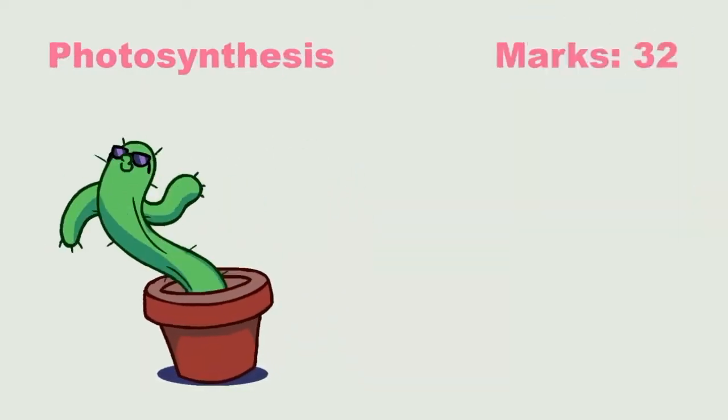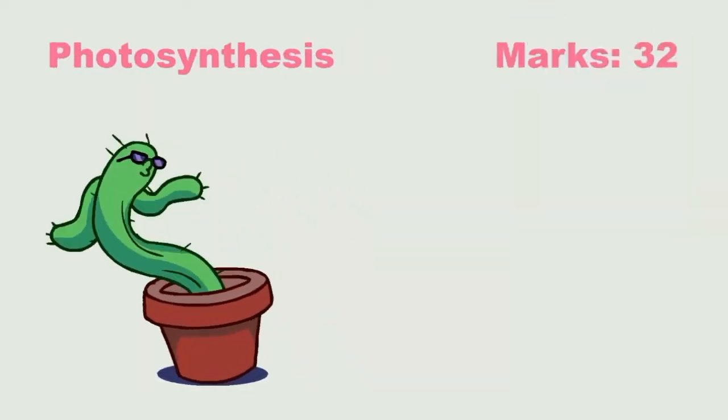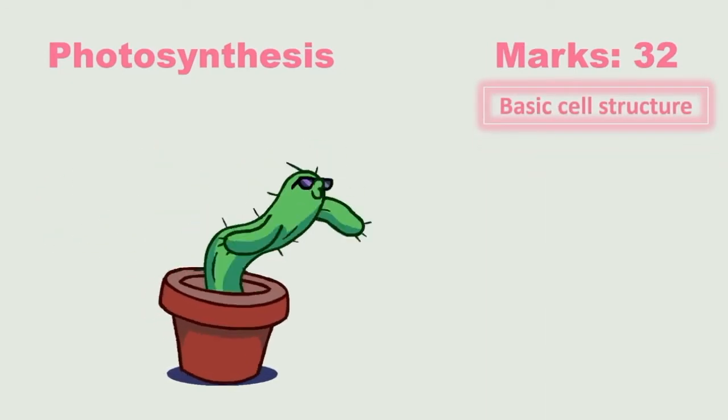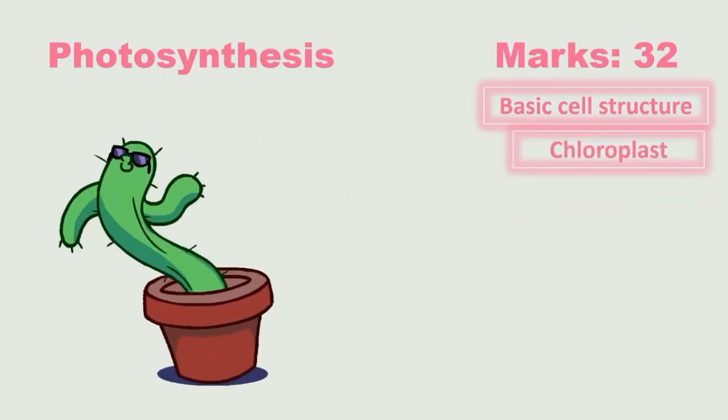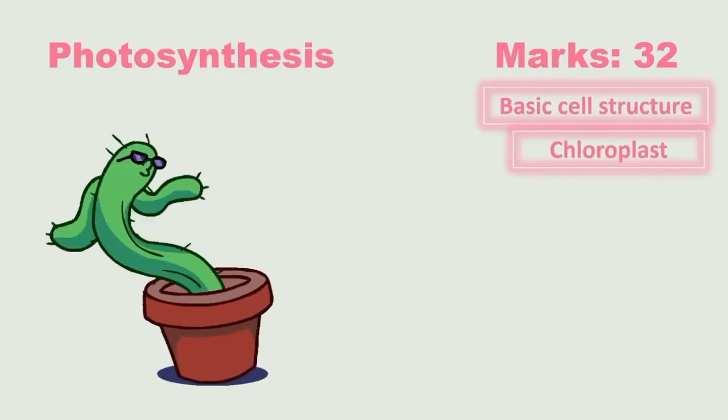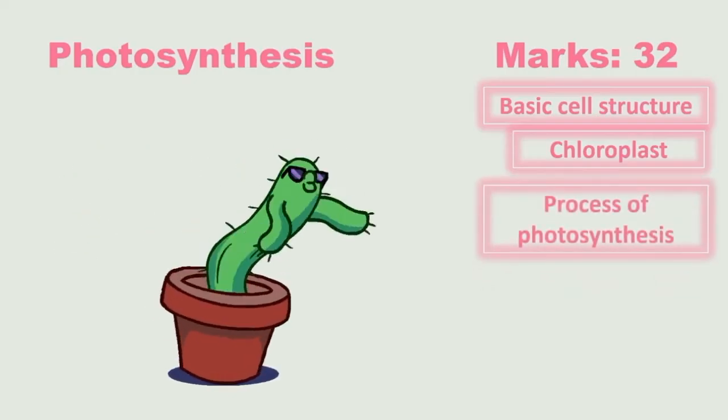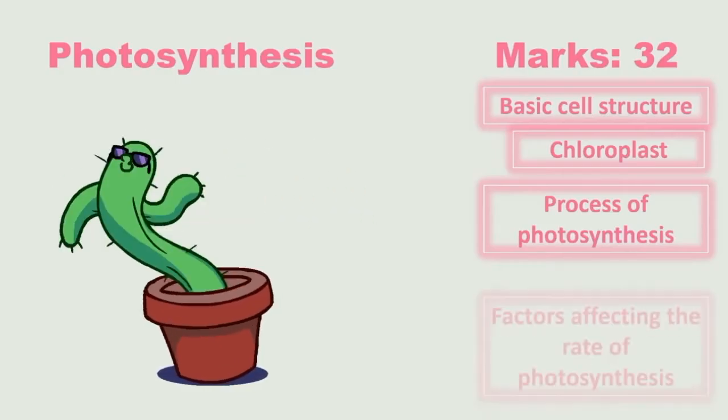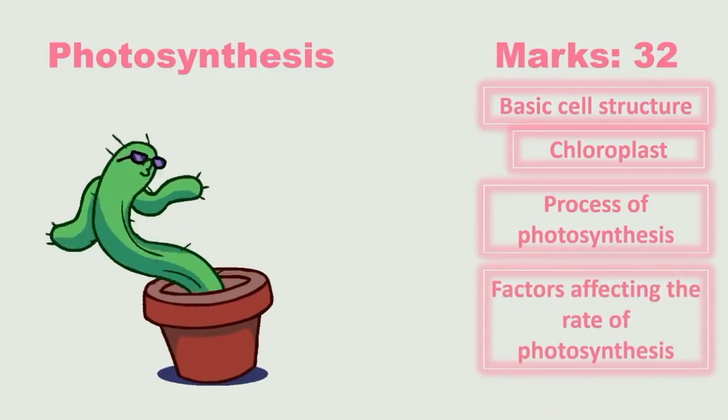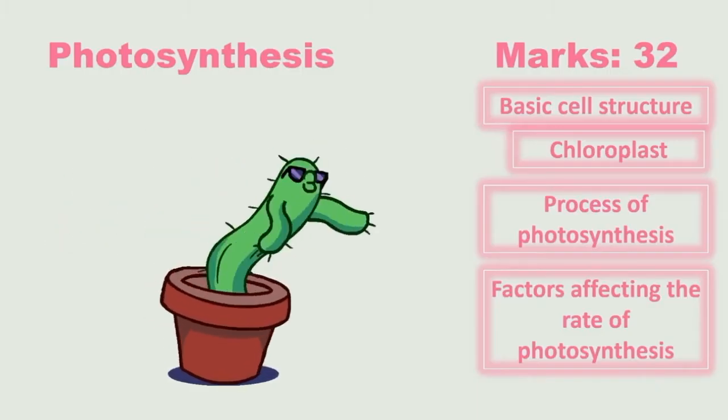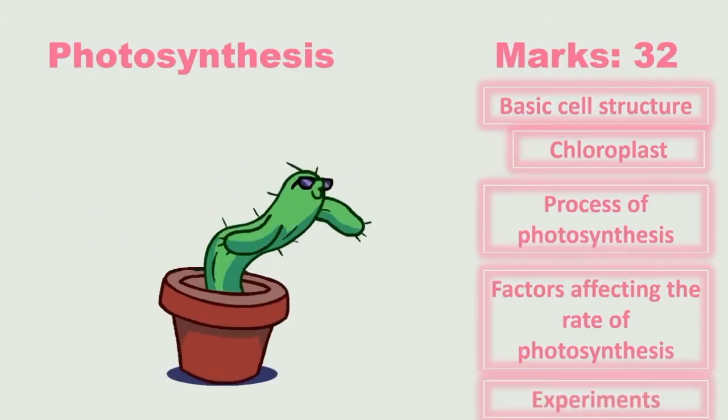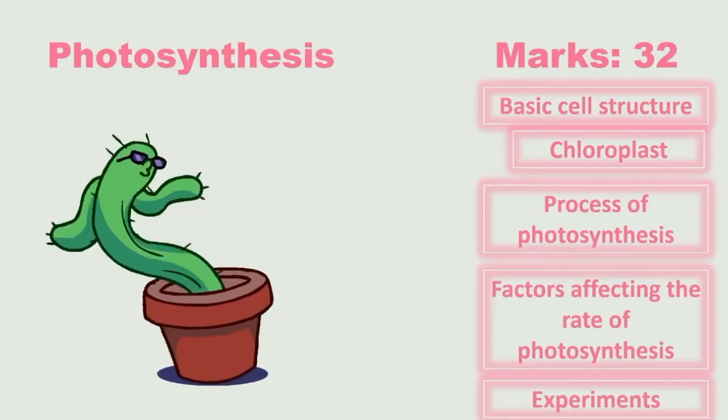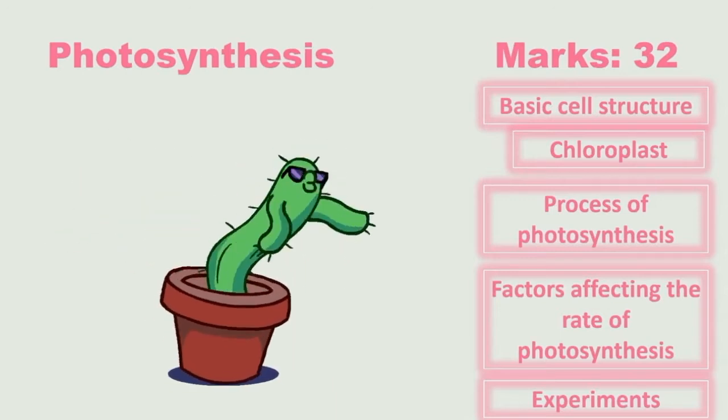The first topic is photosynthesis and the total marks out of 150 is 32. The first thing that you need to know is the basic cell structure, especially referring to the organelle chloroplast. Then also the process of photosynthesis, which includes the light and the dark phase, and factors that affect the rate of photosynthesis. Then there's also experiments that are linked to photosynthesis to test certain factors that are needed for photosynthesis.